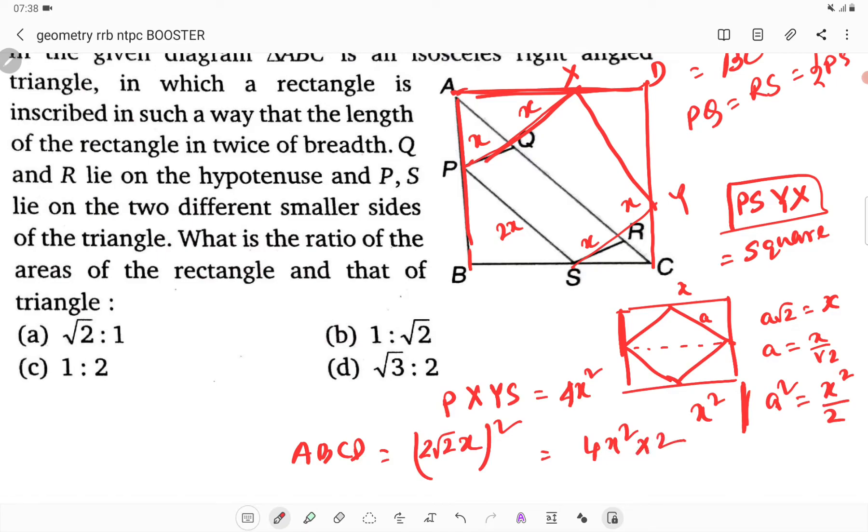So the area of ABCD divided by area of PXYS, what does that become? PXYS area is 4x squared. That equals 8x squared divided by 4x squared, which is 2 to 1.